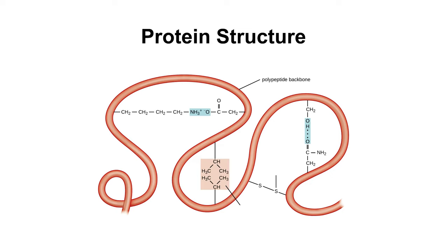R-group interactions that contribute to tertiary structure include hydrogen bonding, ionic bonding, disulfide bridges, and hydrophobic interactions. For example, R-groups with like charges repel one another, while those with opposite charges can form an ionic bond.